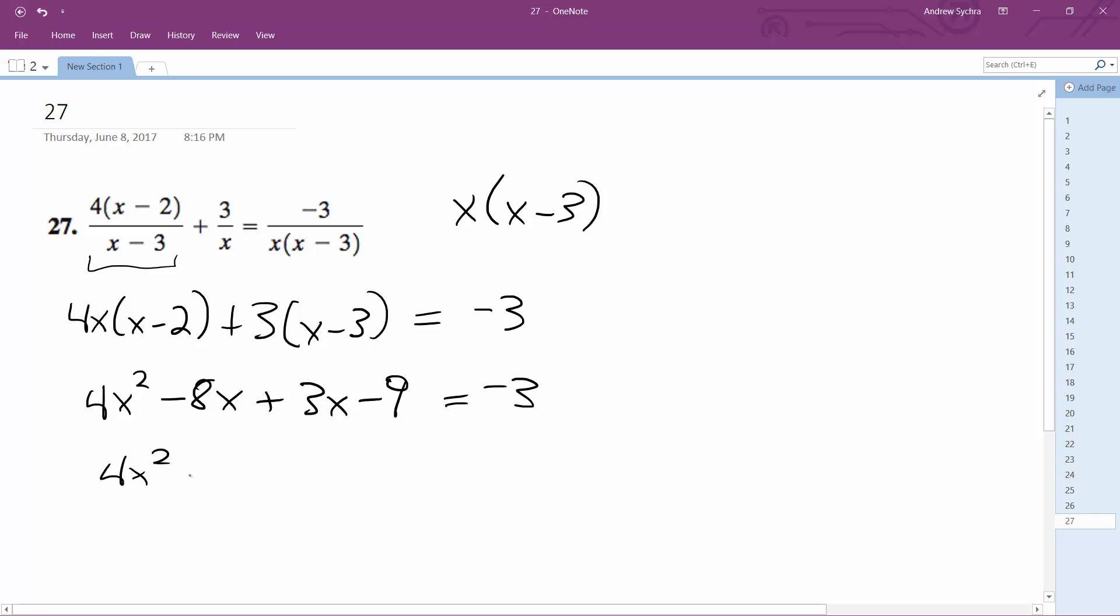4x squared, I'm going to add 3 here, minus 5x minus 6 equals 0.